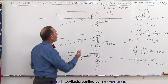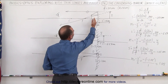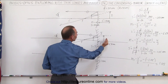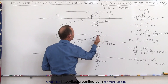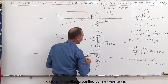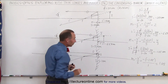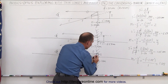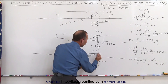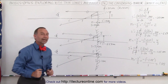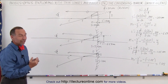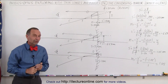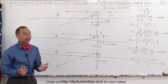In the limit, as the object gets closer and closer to the mirror, the image moves closer and closer to the mirror on the back side. Therefore it's a virtual image, and as the object approaches the mirror from the front, the image approaches the mirror from the back. That's how you can see what happens to the image as the object gets closer and closer to a converging mirror.